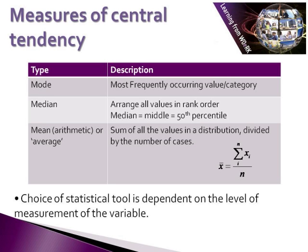The choice of which measure of central tendency to use to describe a particular variable is completely dependent on the level of measurement of that variable — so whether our variable is nominal, ordinal, interval, or ratio, as we discussed in the second lecture on types of data.